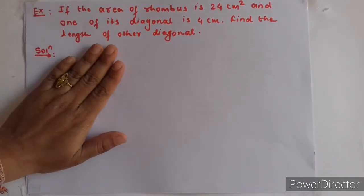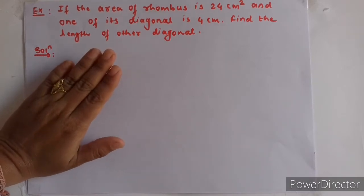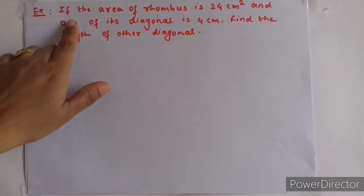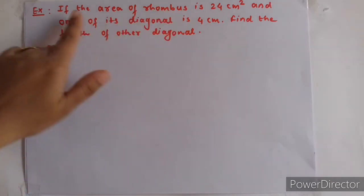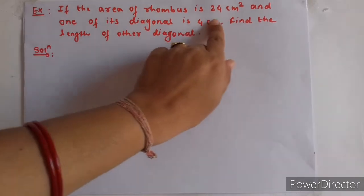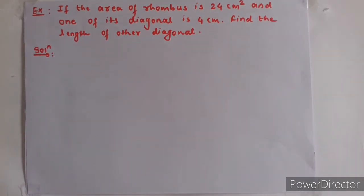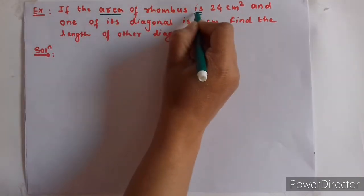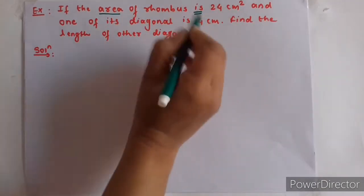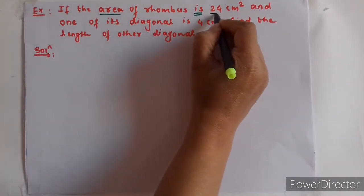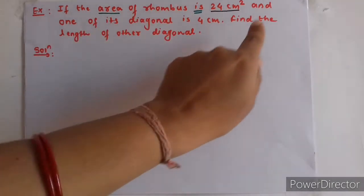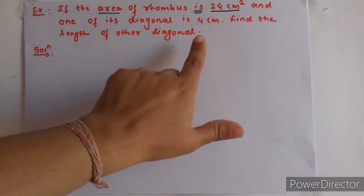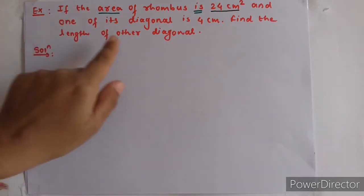In the second example, we see what is given and what we need to find. The problem is: if the area of a rhombus is 24 cm², and one of its diagonals is 4 cm, find the length of the other diagonal.